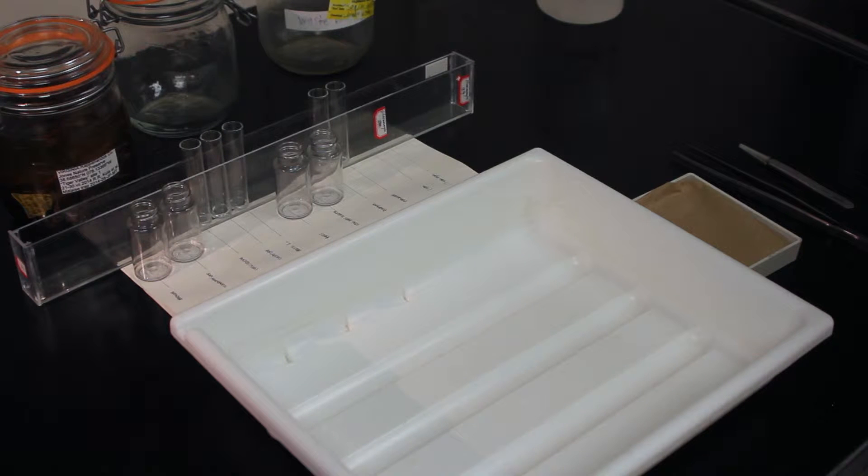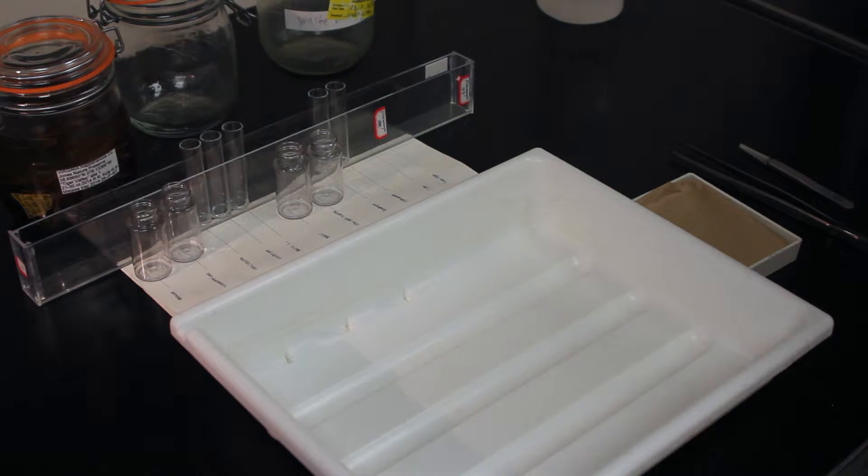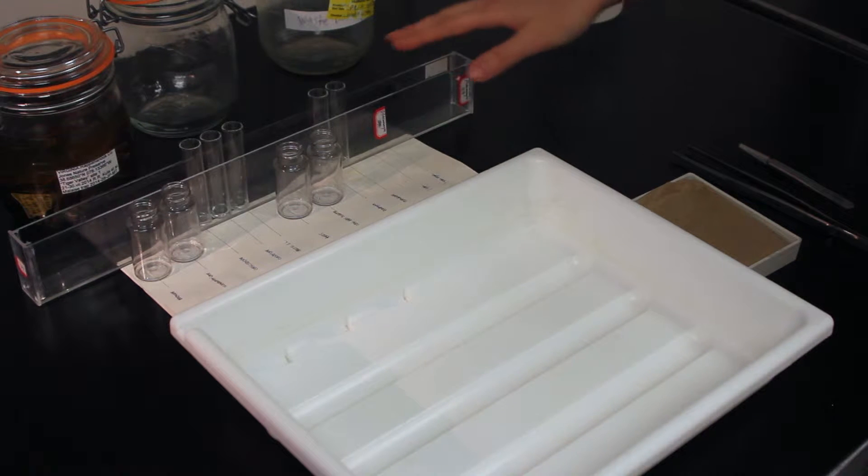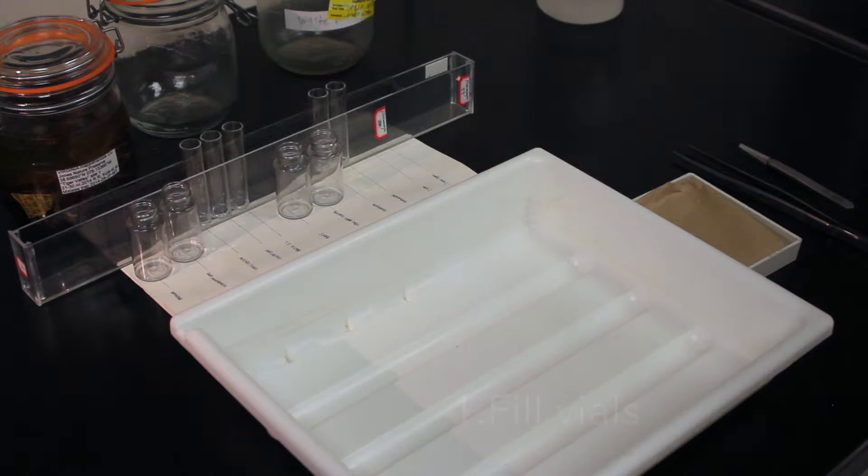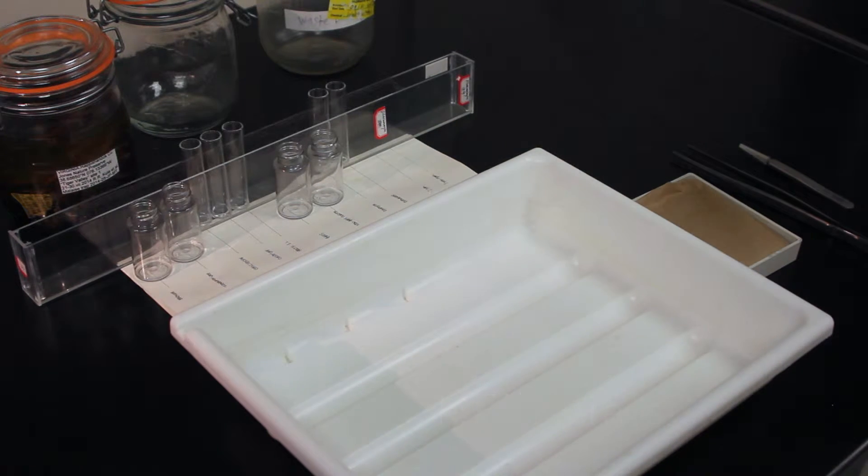To begin sorting our sample, we've set up our vial station according to taxonomic order. Inside the plastic vial rack, we've placed the shell vials and outside we've placed the scintillation vials. First, we're going to need to fill all our vials up with 95% ethanol.